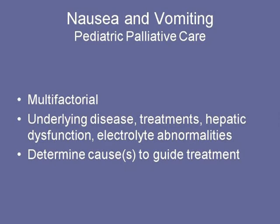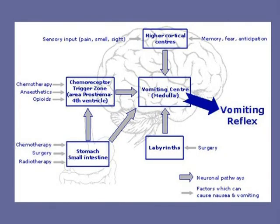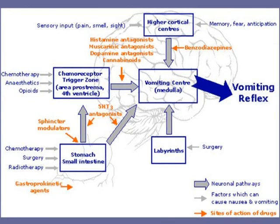Nausea and vomiting can be multifactorial — related to the underlying disease, treatments, hepatic dysfunction, or electrolyte abnormalities. We need to determine the cause to guide treatment. The chemoreceptor trigger zone is in the area postrema of the fourth ventricle; chemotherapy, opioids, and anesthetics stimulate this zone and then the vomiting center in the medulla. Benzodiazepines act on higher cortical centers; dopamine antagonists like haloperidol act between the chemoreceptor zone and the vomiting center, as do cannabinoids.